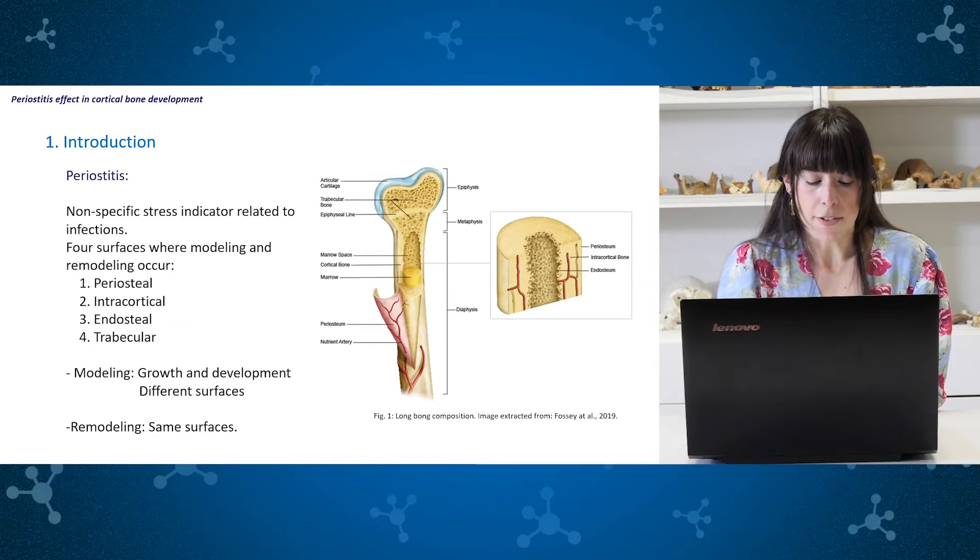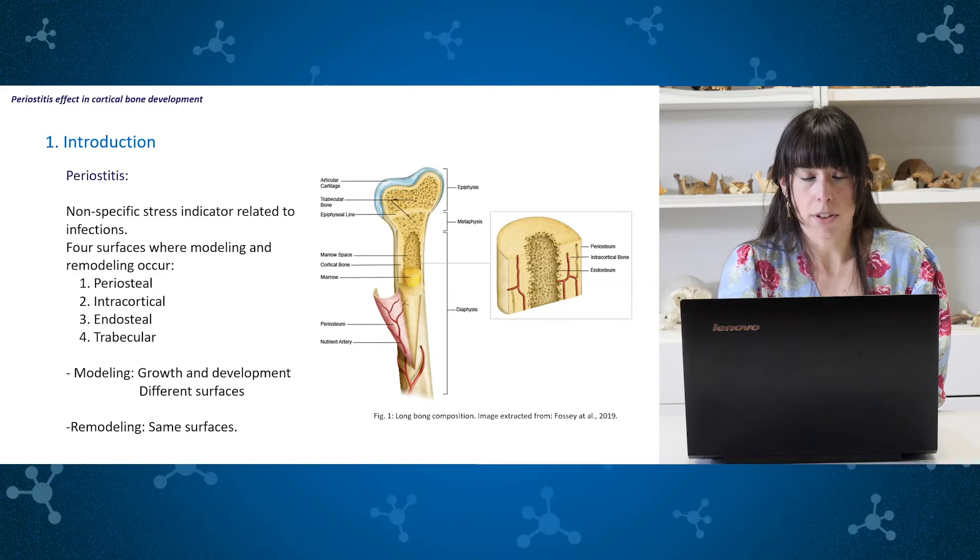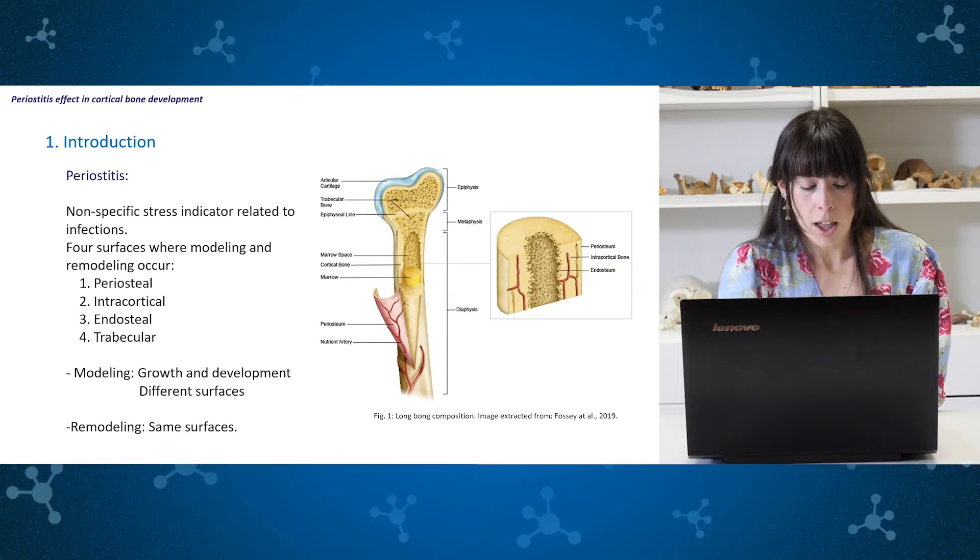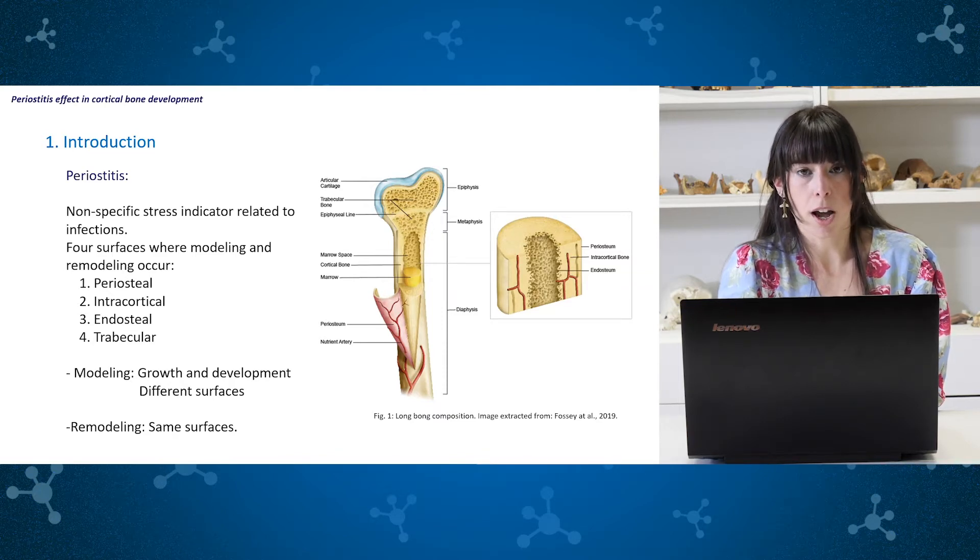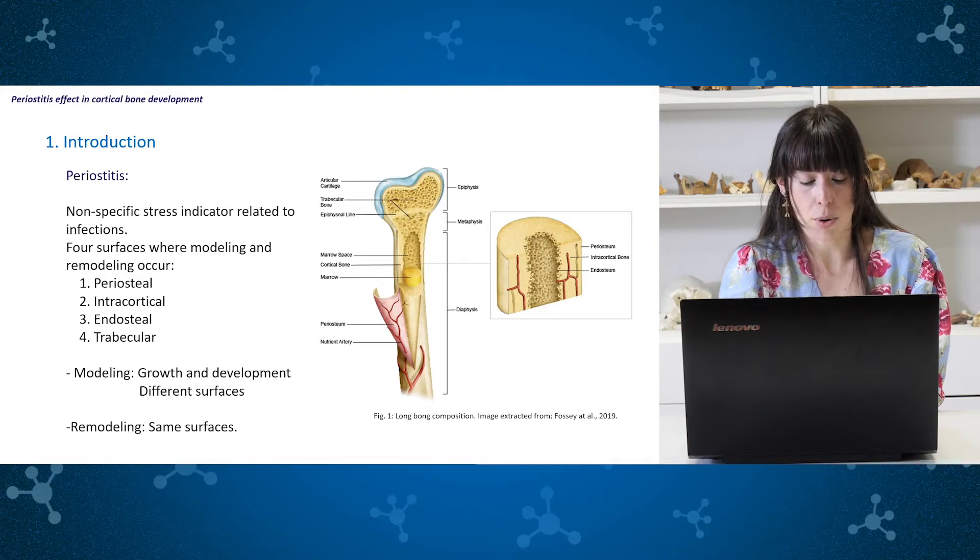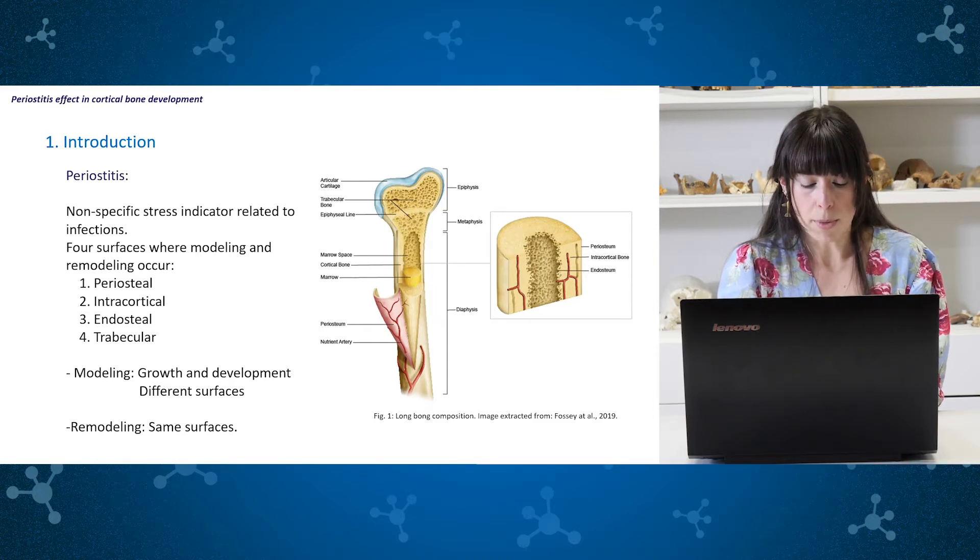Long bone diaphyses have four surfaces on which modeling and remodeling can occur: periosteal, intracortical, endosteal and trabecular. The process of remodeling involves the actions of bone resorption and bone formation on the same surface and at the same time, and it is visible during a lifetime. Meanwhile, the process of modeling occurs during growth and involves bone formation and bone resorption on different surfaces. Both of them are affected by mechanical forces and metabolism.